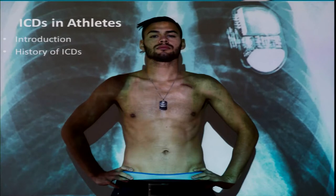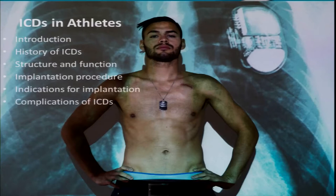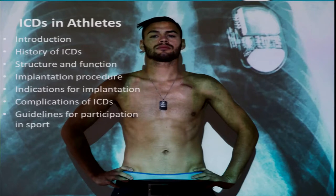I'll give you an outline of the talk. We'll start with an introduction, then talk about the history of ICDs and their structure and function so you can understand how they work, a little bit about the implantation procedure, the indications for implantation in athletes, what happens when things go wrong and the complications that can arise. There are guidelines for participation in sports and we'll discuss those, along with things you need to know if you have an athlete with an ICD.